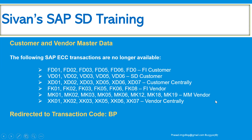We all know that customer and vendor master data — whenever you type the transaction codes like FD01, FD02, XK01, MK01, XD01, and VD01 — these transactions are no longer available. The system automatically redirects to the transaction code called BP, that is Business Partner.